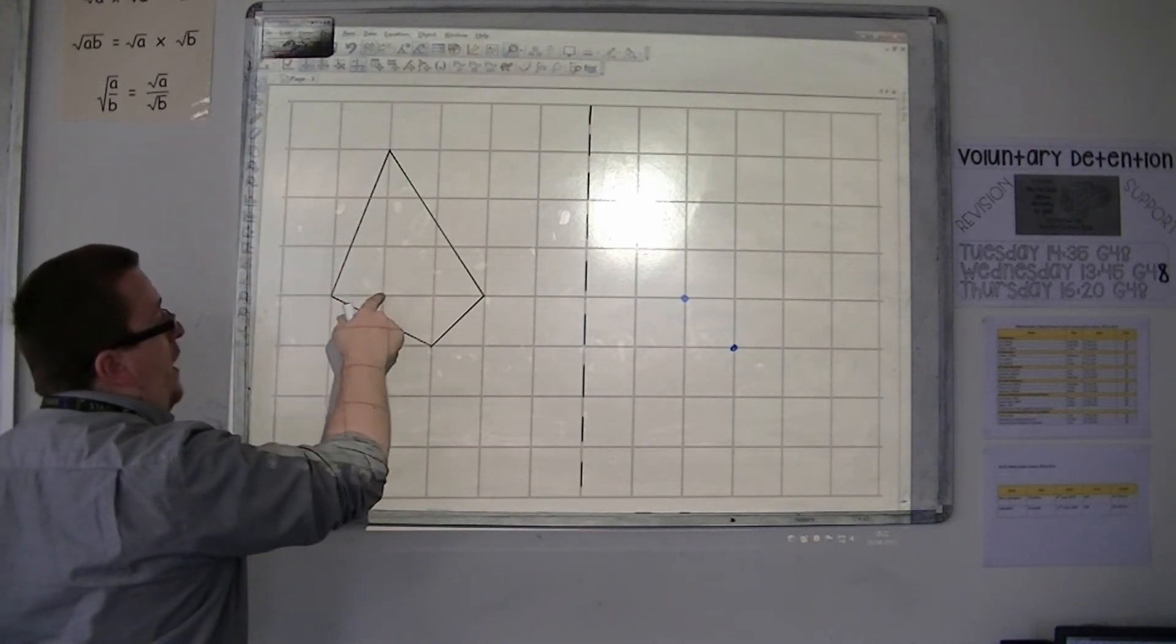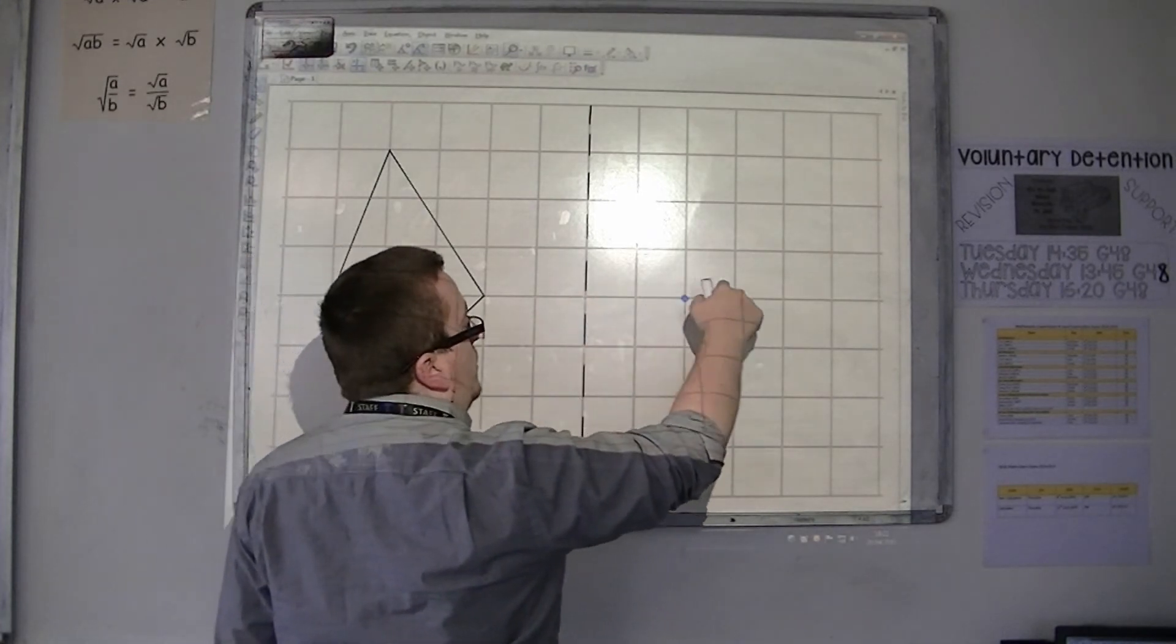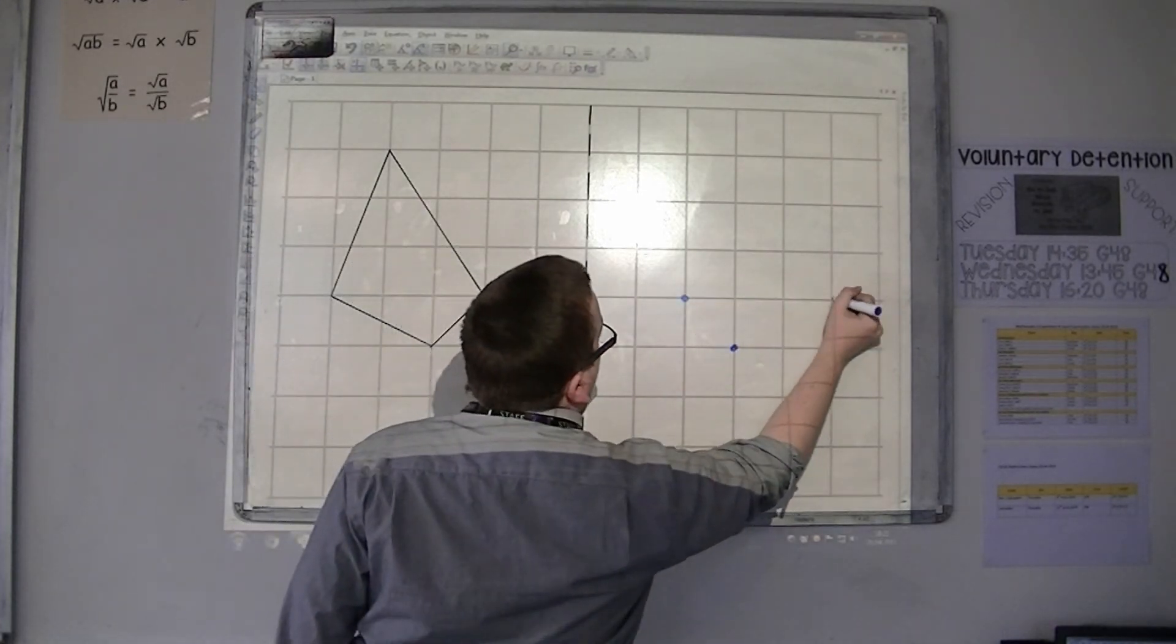This point is one, two, three, four, five points to the mirror line, so one, two, three, four, five points into the mirror.